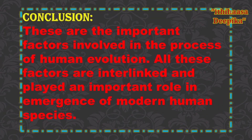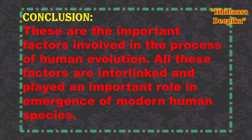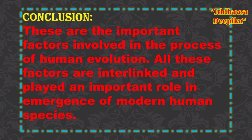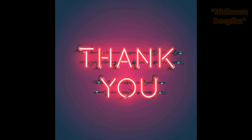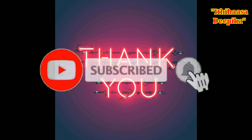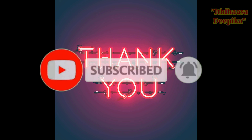Conclusion: These are the important factors involved in the process of human evolution. All these factors are interlinked and played an important role in the emergence of modern human species. Here I stop my explanations on 5-mark and 10-mark questions of chapter number 2. Don't forget to subscribe and click the bell button. Thank you all.